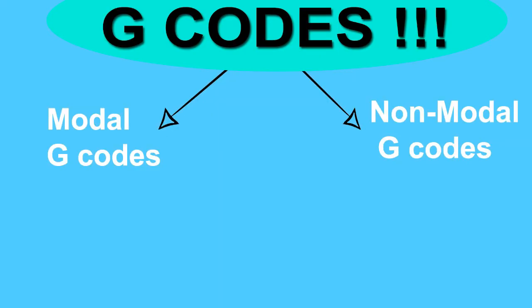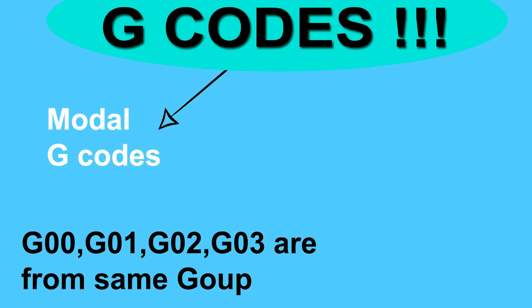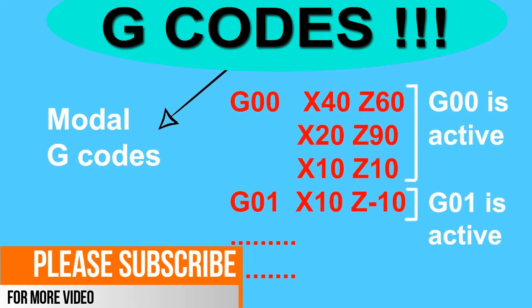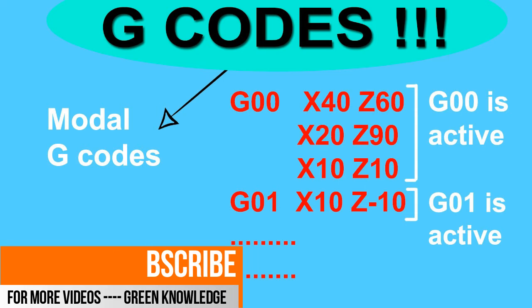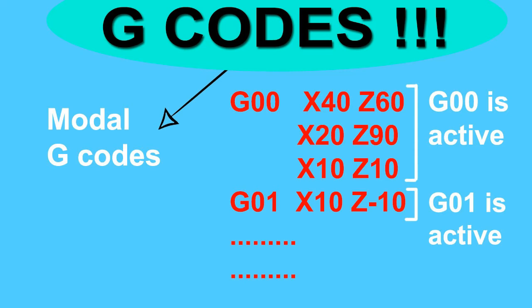There are two types of G-codes: modal G-codes and non-modal G-codes. Modal codes are divided into groups — Group 1, Group 2, Group 3, and so on. Modal codes remain active throughout the program until another code from the same group replaces them. For example, if G0 is written and then G01 appears in a later block, G01 will cancel and replace G0 because it is from the same group.